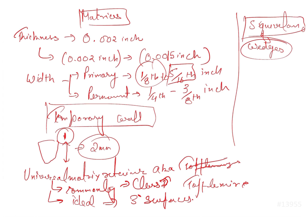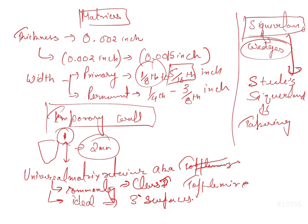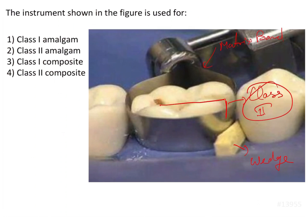Steele's Siqveland matrix is basically a self-adjusting matrix retainer and does not require wedges. It is used when there is a marked difference in the dimension of cervical and occlusal surfaces — so whenever there is a tapering tooth, you are going to use the Steele's Siqveland matrix retainer. The figure shows the Toffelmire or universal matrix band, used for conventional Class 2 amalgam restoration.